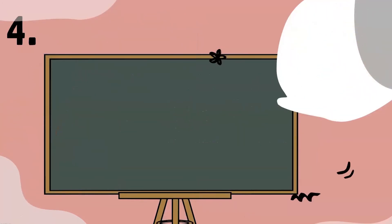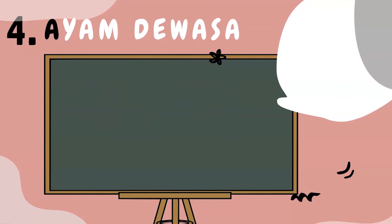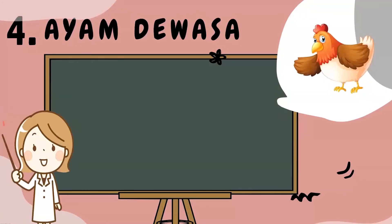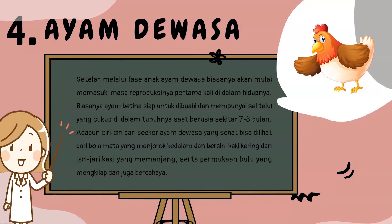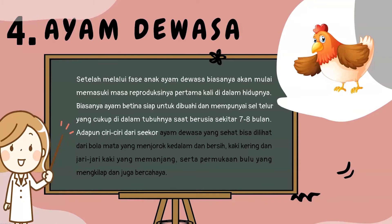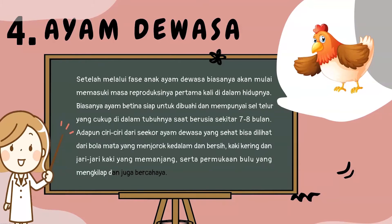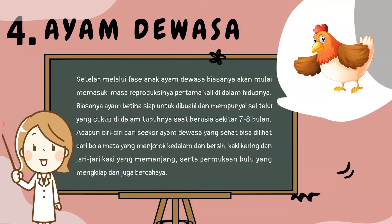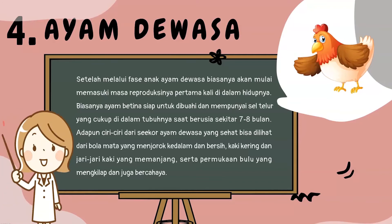Untuk tahap terakhir, setelah melalui fase anak ayam, seekor ayam dewasa biasanya mulai memasuki masa reproduksinya untuk pertama kali. Biasanya ayam betina mulai siap untuk dibuahi dan mempunyai sel telur yang cukup di dalam tubuhnya saat mereka berusia sekitar 7-8 bulan. Adapun ciri-ciri dari seekor ayam dewasa yang sehat bisa dilihat dari bola mata yang menjorok ke dalam dan bersih, kaki kering, jari-jari kaki yang memanjang, serta permukaan bulu yang mengkilap.